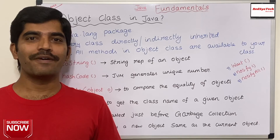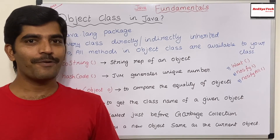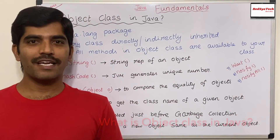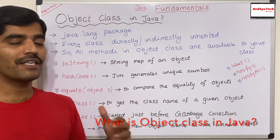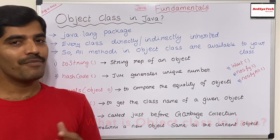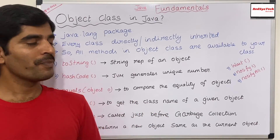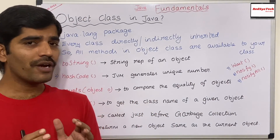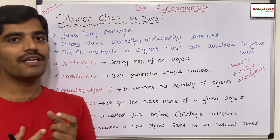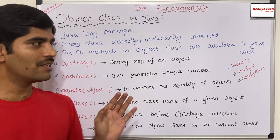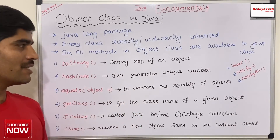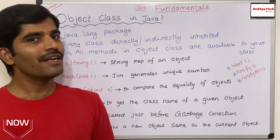Hello everyone, welcome to Redshift Tech. I'm Karthik Pundaswamy. Today we are going to look at one of the interesting topics in Java, which is the Object class. Many people say this is one of the toughest topics to understand, but at the same time it is very important because it is the heart of every class we create in Java. I will give you a simple explanation about how each method works and how it actually behaves in real-time code.